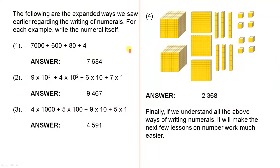The following are the expanded ways we saw earlier regarding the writing of numerals. For each example, write the numeral itself. So for seven thousand plus six hundred plus eighty plus four, the answer is seven thousand six hundred and eighty-four. Nine times 10 to the power of 3 plus 4 times 10 squared plus 6 times 10 plus 7 times 1 is nine thousand four hundred and sixty-seven — 9467.